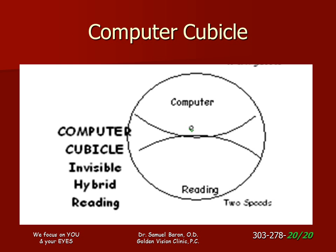The computer cubicle is a special lens designed to enable you to do your computing and reading with one lens. It is really beneficial if you spend all day in the cubicle doing a great deal of computing and reading. Some patients just leave them by their computer. This design has the widest field of vision for computing and reading.